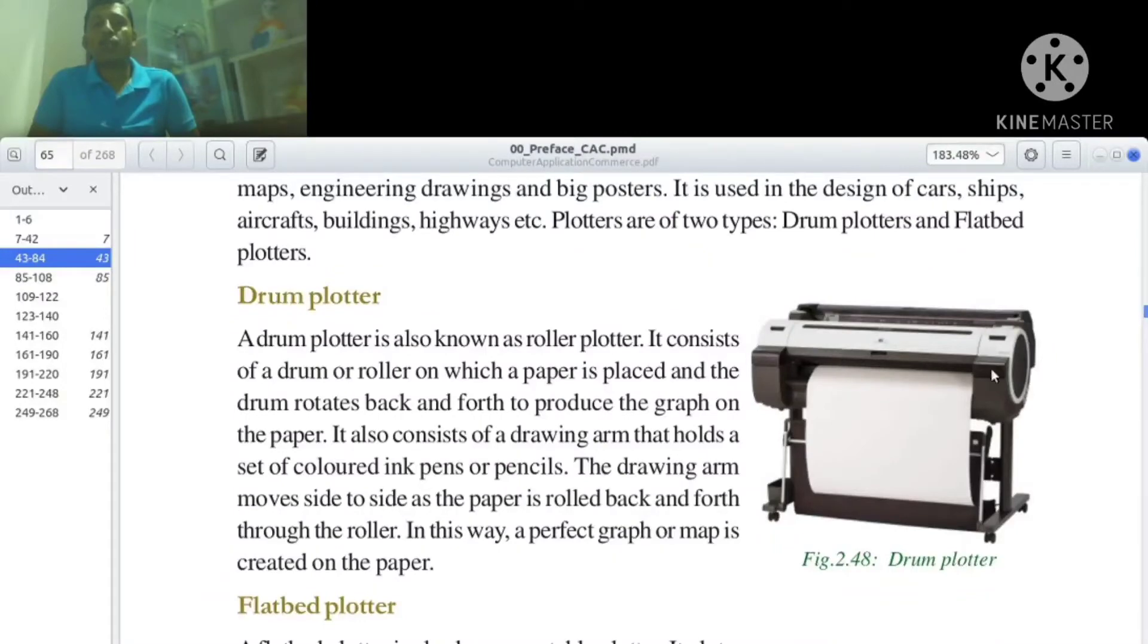The drum plotter consists of a drum roller, paper, and a drawing arm.